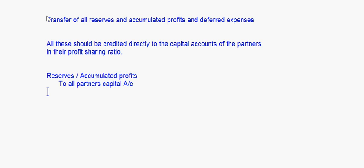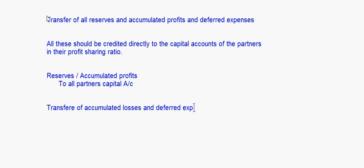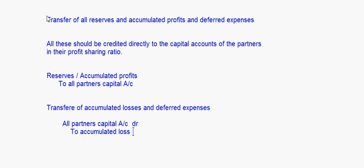This is in case of accumulated profits. If there is an accumulated loss, the entry will be: All Partners' Capital Account debit to Accumulated Losses Account and to Deferred Expenses Account. All these will be done in their profit sharing ratio.